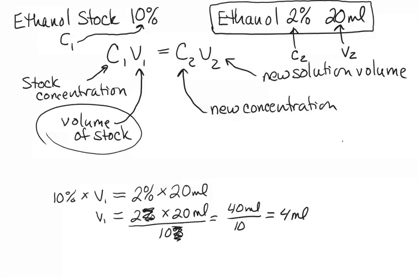So recall, we want to make a total of 20 milliliters of our 2%. 4 milliliters will be the 10% stock, which means that the remaining 16 milliliters will be water. We're going to dilute that high 10% stock to make a 2% new ethanol solution by mixing 4 milliliters of the 10% stock plus 16 milliliters of water.